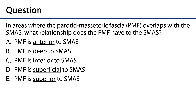That leads us to our assessment question: In areas where the parotid masseteric fascia (PMF) overlaps with the SMAS, what relationship does the PMF have to the SMAS? Option A: PMF is anterior to the SMAS — no, the SMAS is generally more anterior. Option B: PMF is deep to the SMAS — yes, that's correct. They overlap for most of their distribution and the SMAS is superficial to the PMF. Option C: PMF is inferior to the SMAS — no. Option D: PMF is superficial to the SMAS — no, that's not even ballpark correct. Option E: PMF is superior to the SMAS — no. The correct and only answer is B: PMF is deep to the SMAS. Thank you very much for your time.